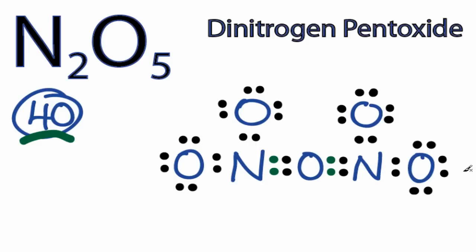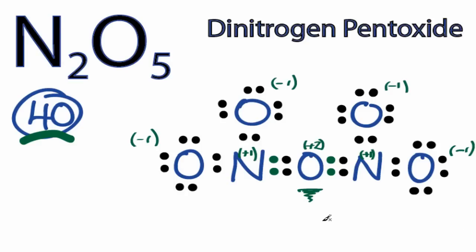The problem is, when we look at our formal charges, they don't seem quite right. First of all, they're not very close to zero. And when I look at this central oxygen here, oxygen's more electronegative than the nitrogens here. I wouldn't expect to see a positive 2 formal charge on an oxygen. So I don't think this is the best structure for N2O5.